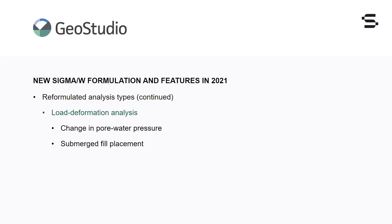Sigma W is now capable of analyzing submerged fill placement in load deformation analyses by detecting the presence of ponding at the ground surface and ensuring that the gravity activation procedure associated with region activation uses the correct soil unit weight.